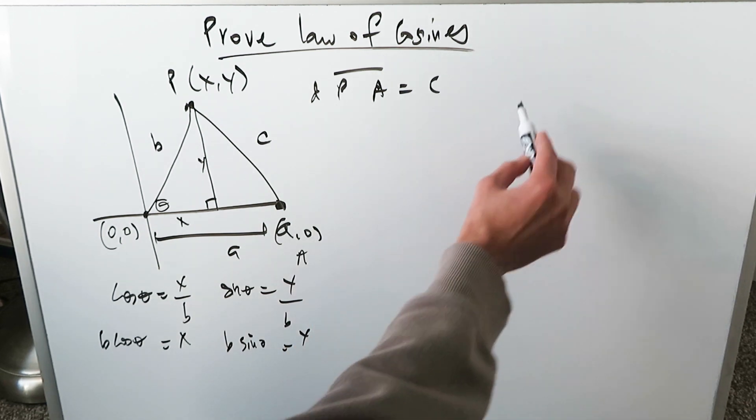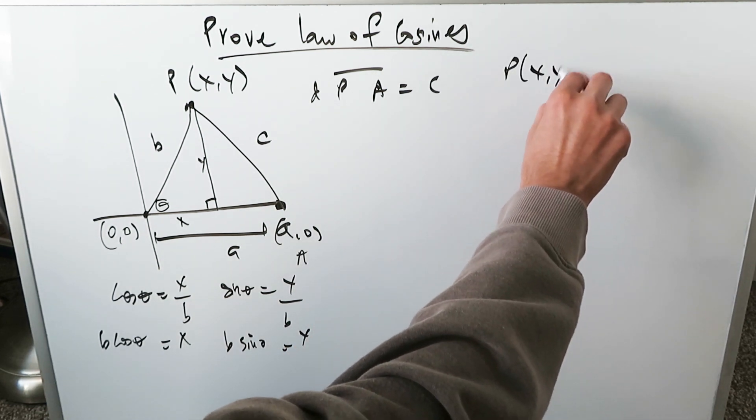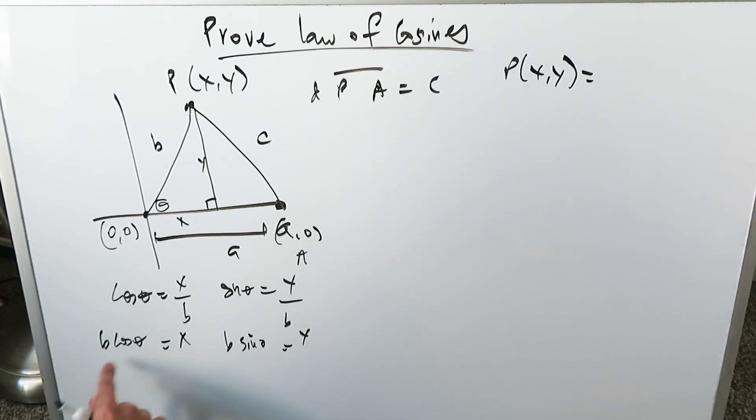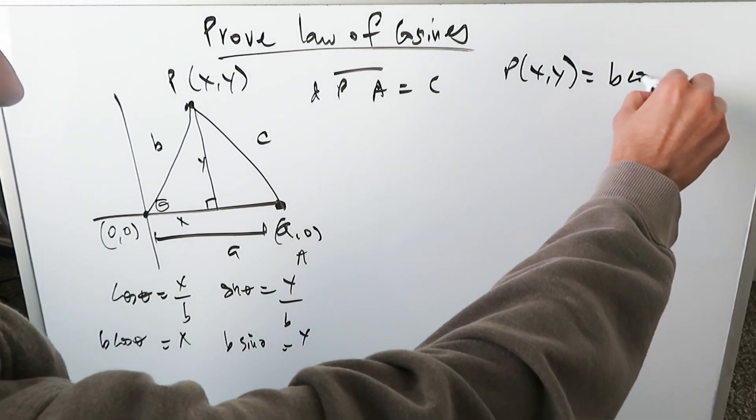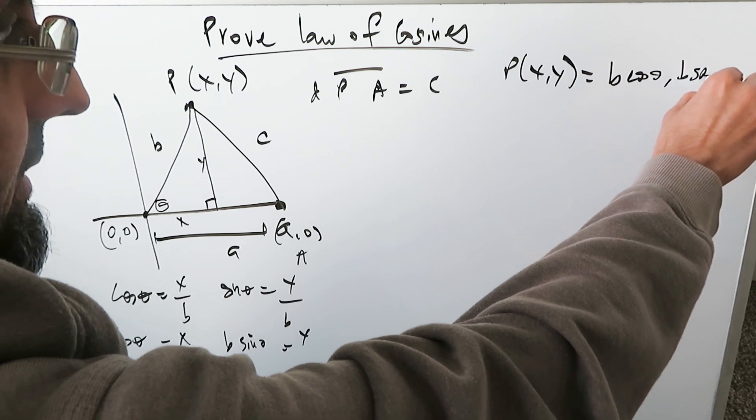So now we know that point P, which is x, y is equal to right over here, which you see. It will be b cosine theta and b sine theta.